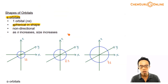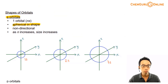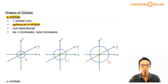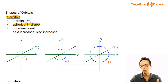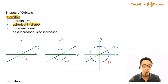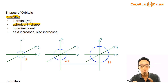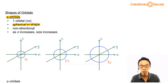Shapes of orbitals are actually quite easy for most of them. It's pretty standard, so we just need to remember the shape, then when they ask us questions involving this, it's pretty straightforward. Hardly we have any variations involving shapes of orbitals.